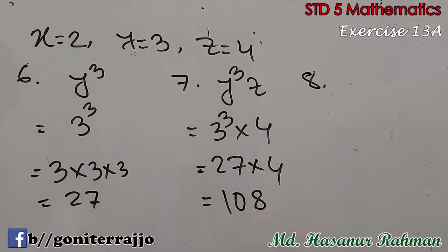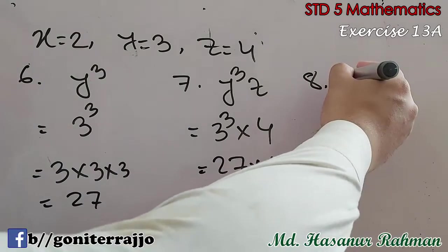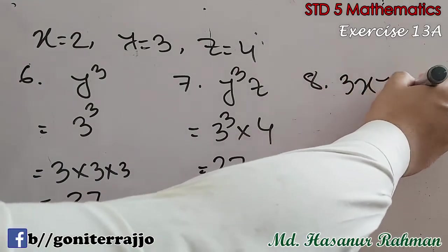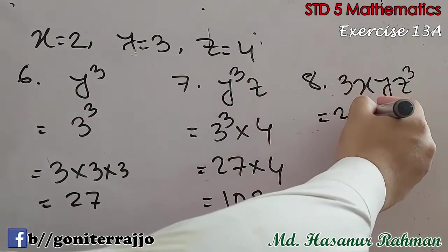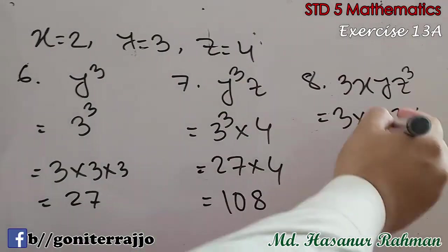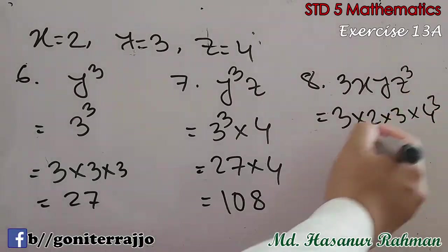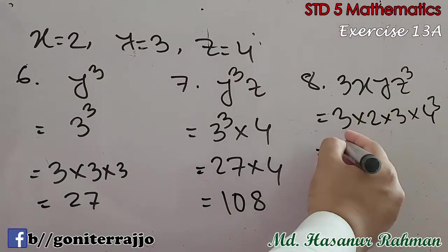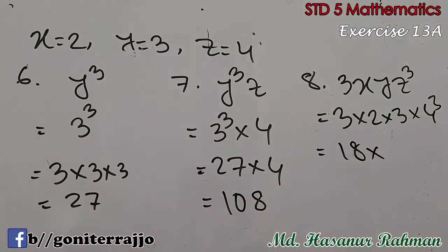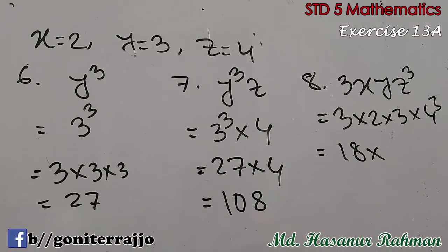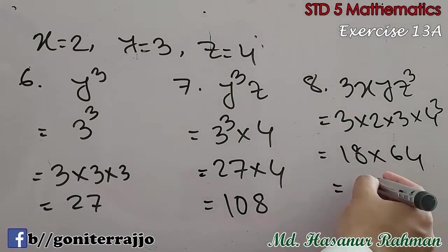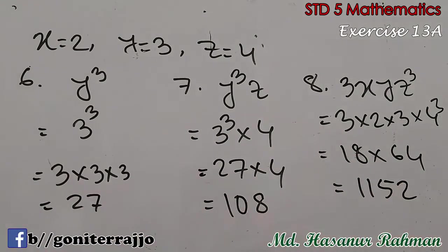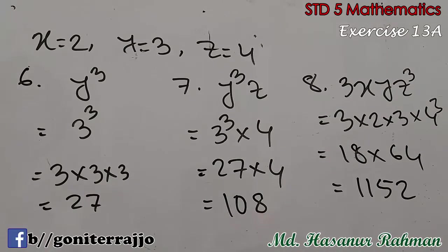Now number 8: 3xyz³. So here 3 into x — the value of x is 2 — into the value of y, which is 3, into the value of z, which is 4, cube. Now 3 times 2 is 6, times 3 is 18, times 4 cube. 4 cube means 4 times 4 is 16, times 4 is 64. So 18 times 64 is 1152. So 1152 will be the answer of number 8.